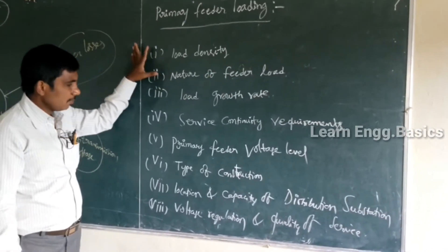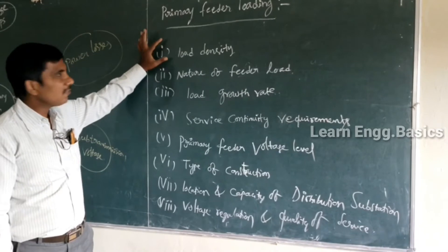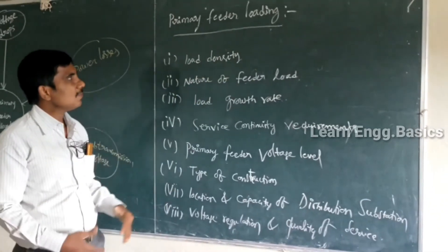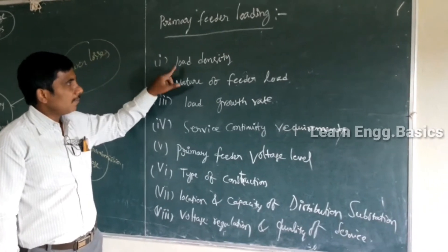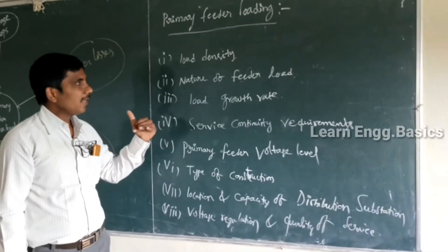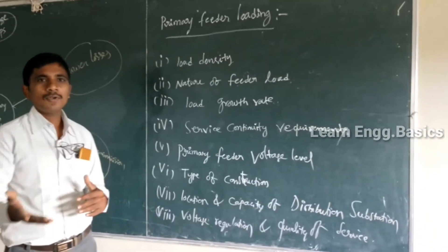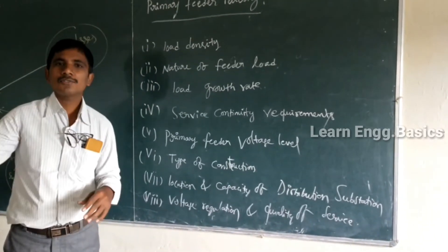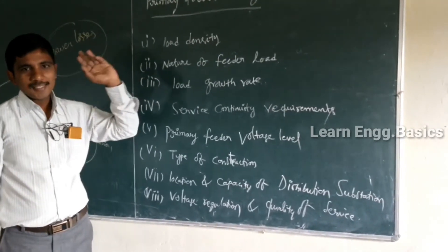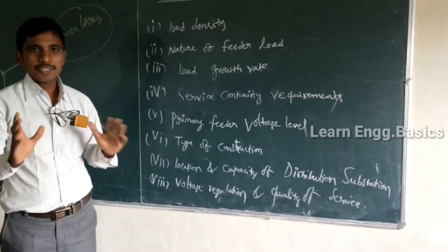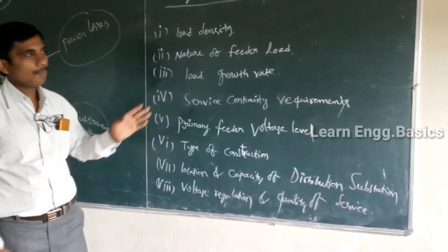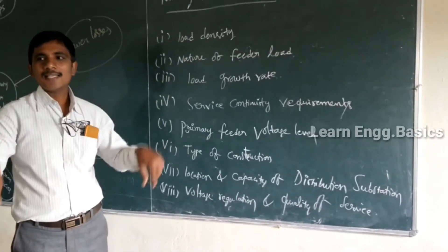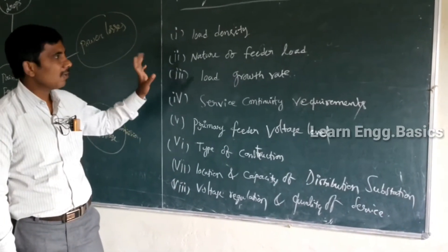Primary feeder loading depends on many factors. One factor is load density — the load per unit area is called load density. Total load divided by total area gives the load density. If load density is more, the primary feeder voltage level will increase, and more distribution transformers will be needed. For example, in a city with three streets, if the load density is high, they will assign a separate distribution transformer to each street or increase the kVA rating of the transformer.